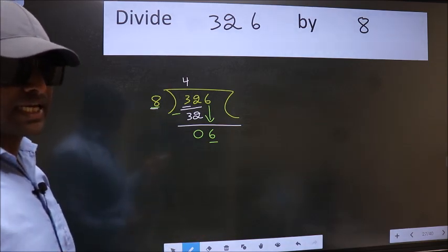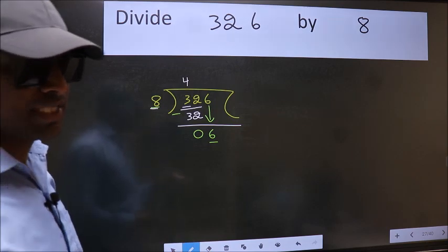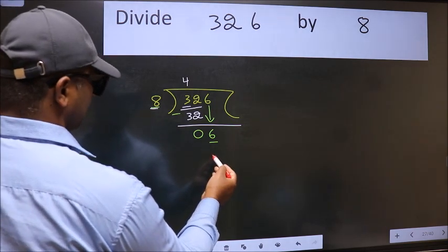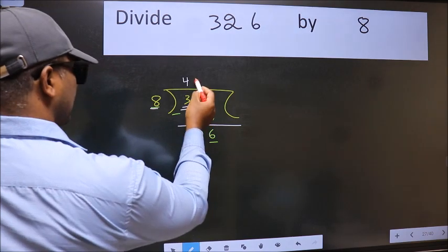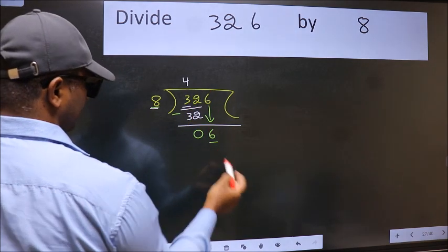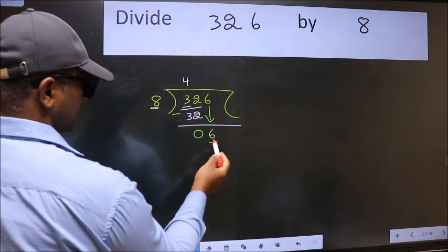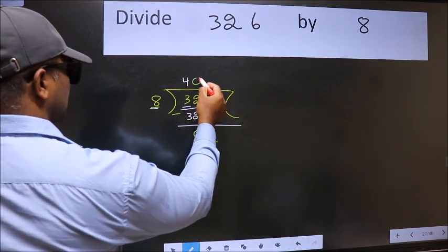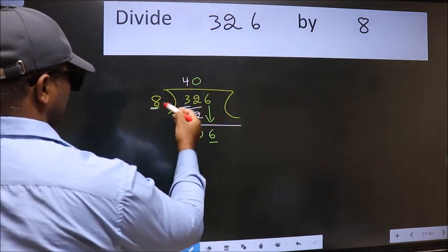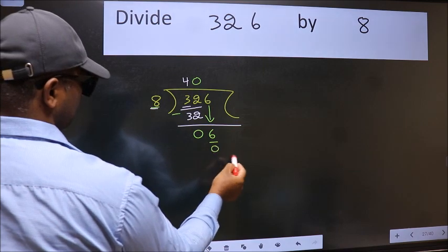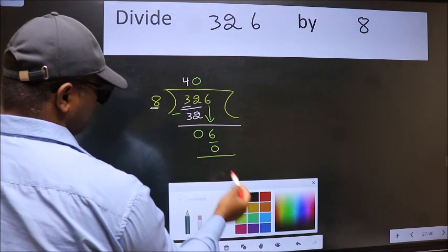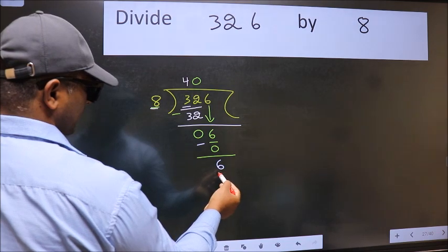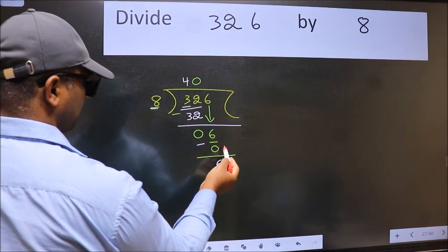Instead of that, what we should think of doing is: which number should we take here? If I take 1, we will get 8. But 8 is larger than 6. So what we do is, we take 0. So 8 into 0 is 0. Now we subtract — we get 6. Over here, we did not bring any number down.